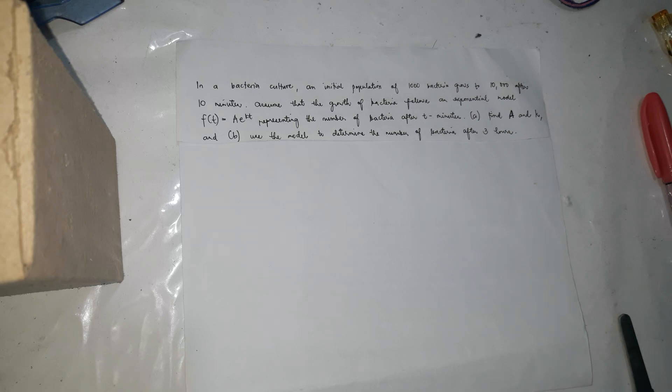So now we're going to solve problems involving logarithmic functions. The problem is, in a bacteria culture, an initial population of 1,000 bacteria grows to 10,000 after 10 minutes. So 1,000 bacteria grew to 10,000 after 10 minutes. Assume that the growth of bacteria follows an exponential model, f(t) equals a times e to the power of kt, representing the number of bacteria after t minutes. So find a and k.